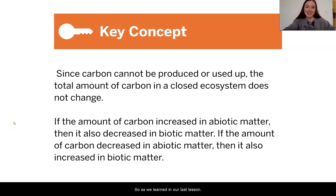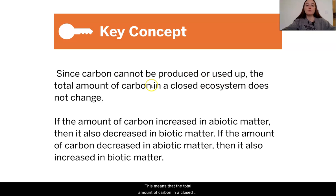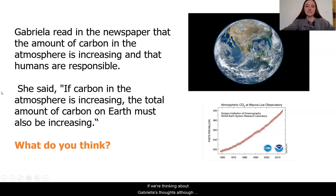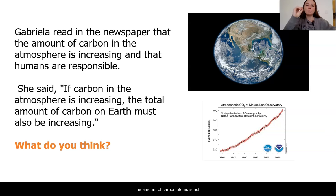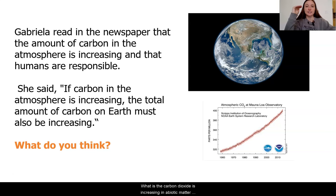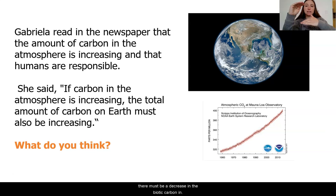As we learned in our last lesson, carbon cannot be produced or used up. This means that the total amount of carbon in a closed ecosystem does not change. So if we're thinking about Gabriella's thoughts, although the carbon dioxide is increasing, the amount of carbon atoms is not. In fact, because the carbon dioxide is increasing in abiotic matter, there must be a decrease in the biotic carbon on our planet.